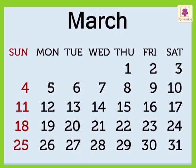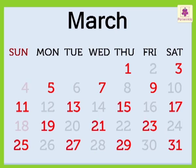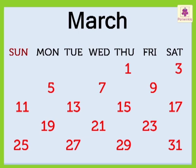Now, let us see if we can identify the odd numbers. All numbers with the digits 1, 3, 5, 7, or 9 in the 1's place are called odd numbers. Yay! We have successfully identified the odd numbers as well.